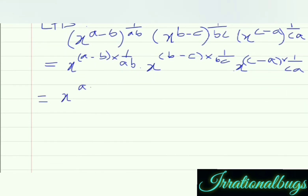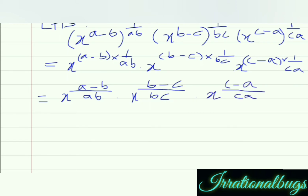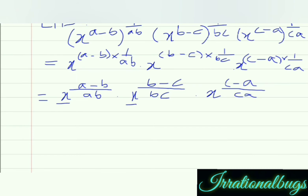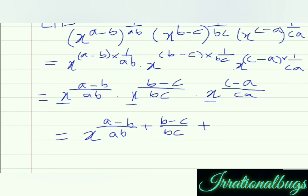इसे हम लिख सकते हैं: x raised to the power (a minus b) upon ab, multiplied by x raised to the power (b minus c) upon bc, multiplied by x raised to the power (c minus a) upon ca. अब अगर हम देखें तो यहां तीनों base सेम हैं — x, x and x. और product law के हिसाब से, अगर सेम base पे अलग-अलग powers हों तो वो आपस में add होती हैं. So, x raised to the power (a minus b) upon ab plus (b minus c) upon bc plus (c minus a) upon ca.